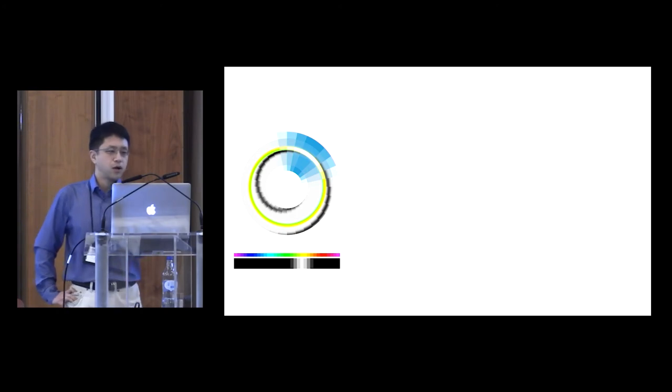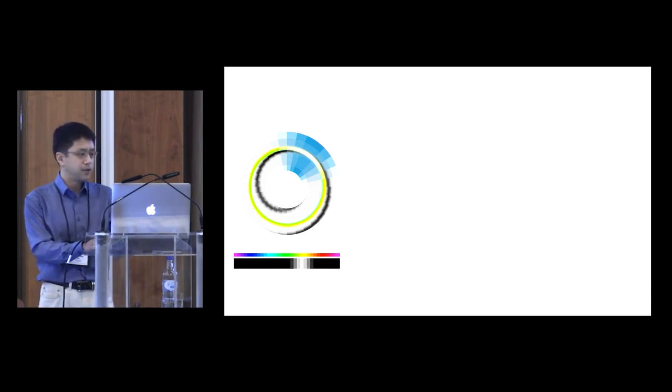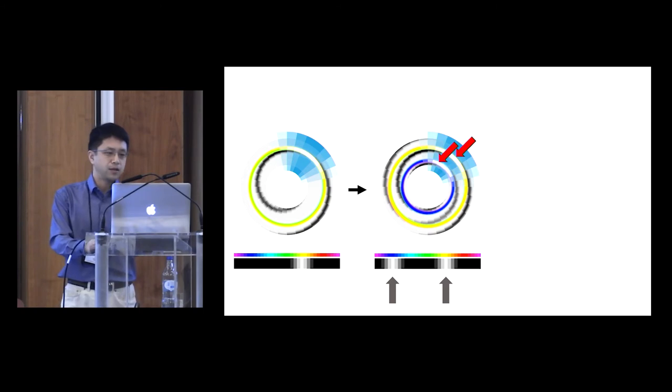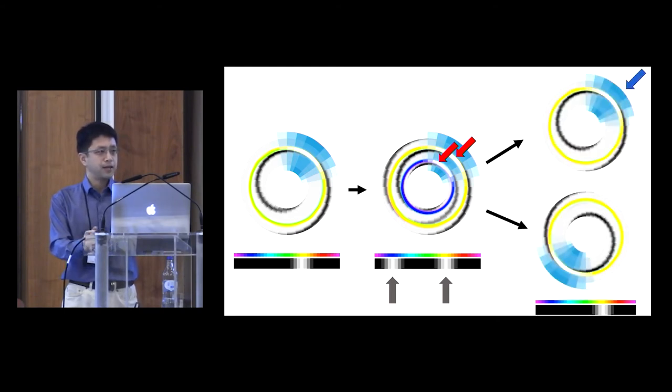Let's consider one of its interesting predictions. Here, we have a synaptic weight matrix with a single dark spiral. If we now put the fly in a scene with two identical vertical stripes 180 degrees apart, then at the end, you would see two bands of synapses, two bands of dark spiral of weak synapses.